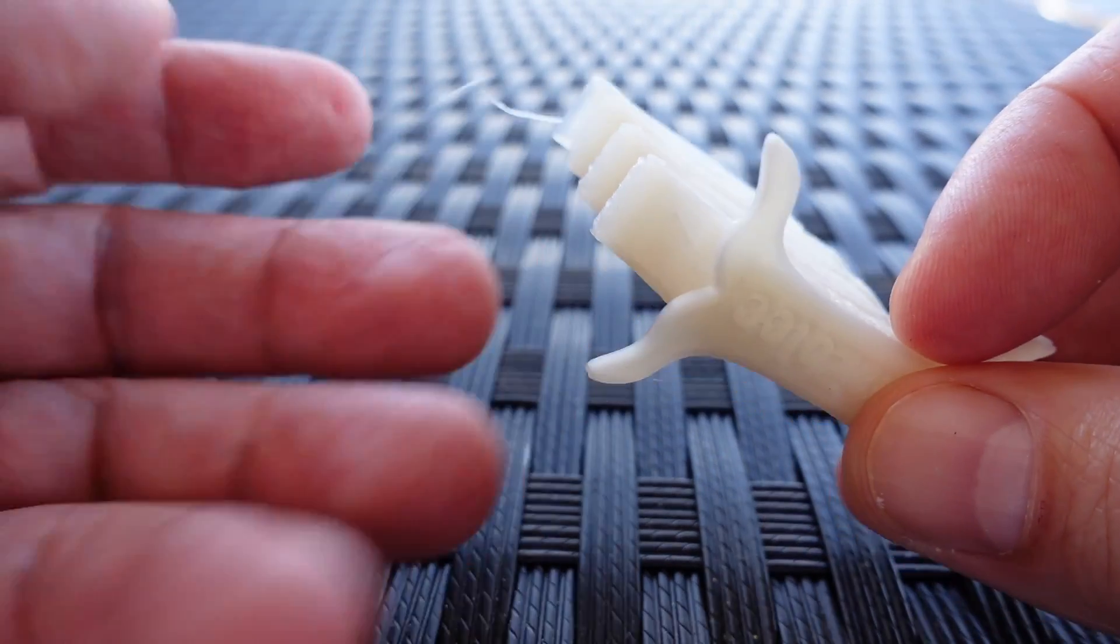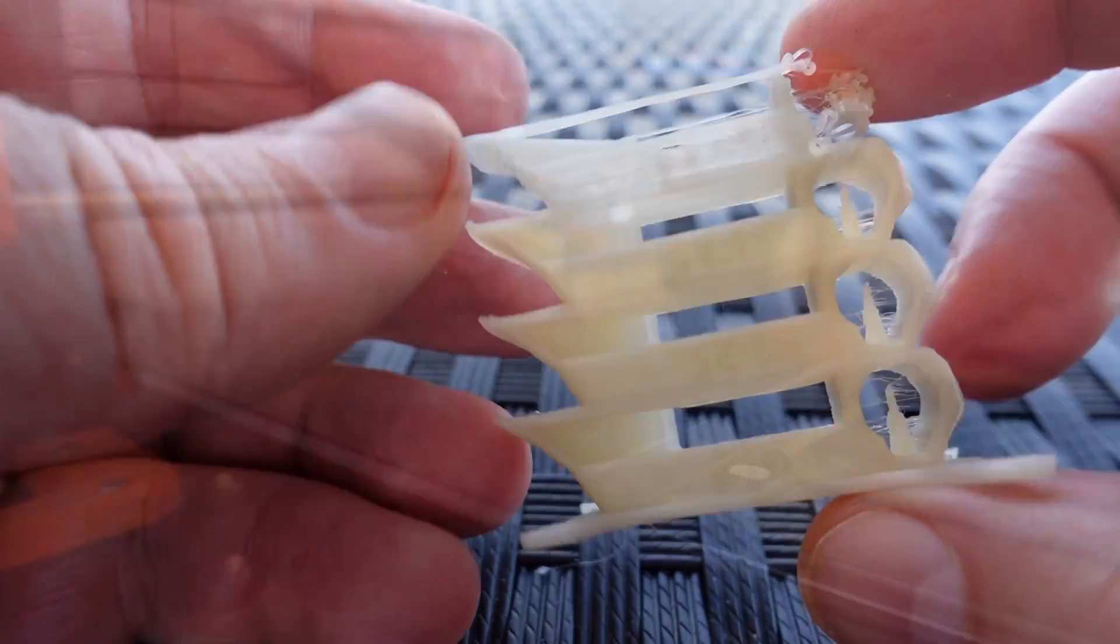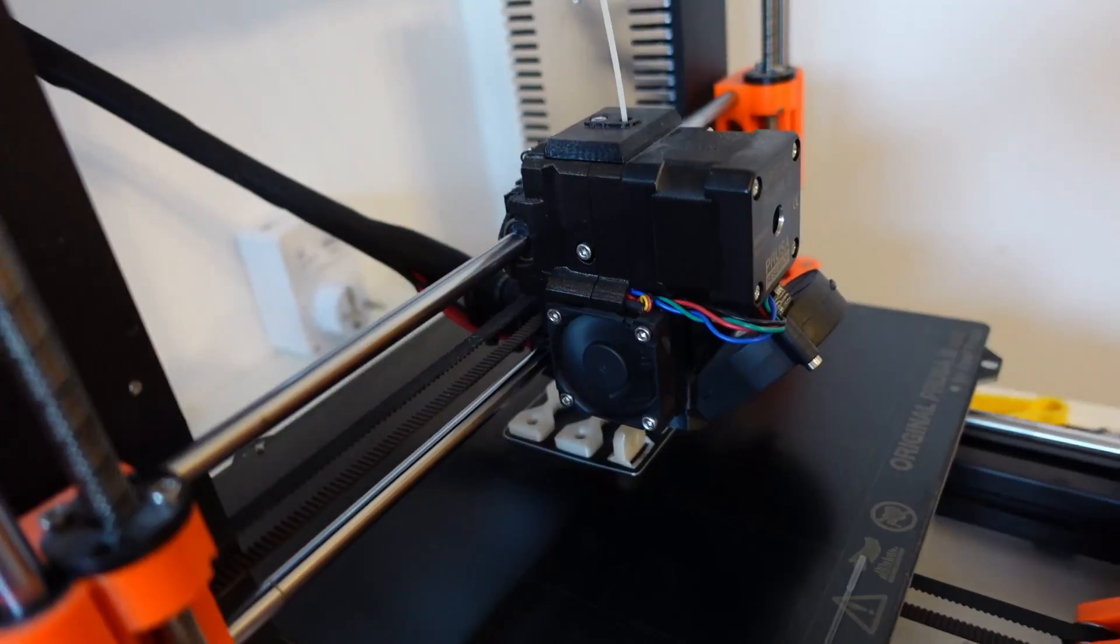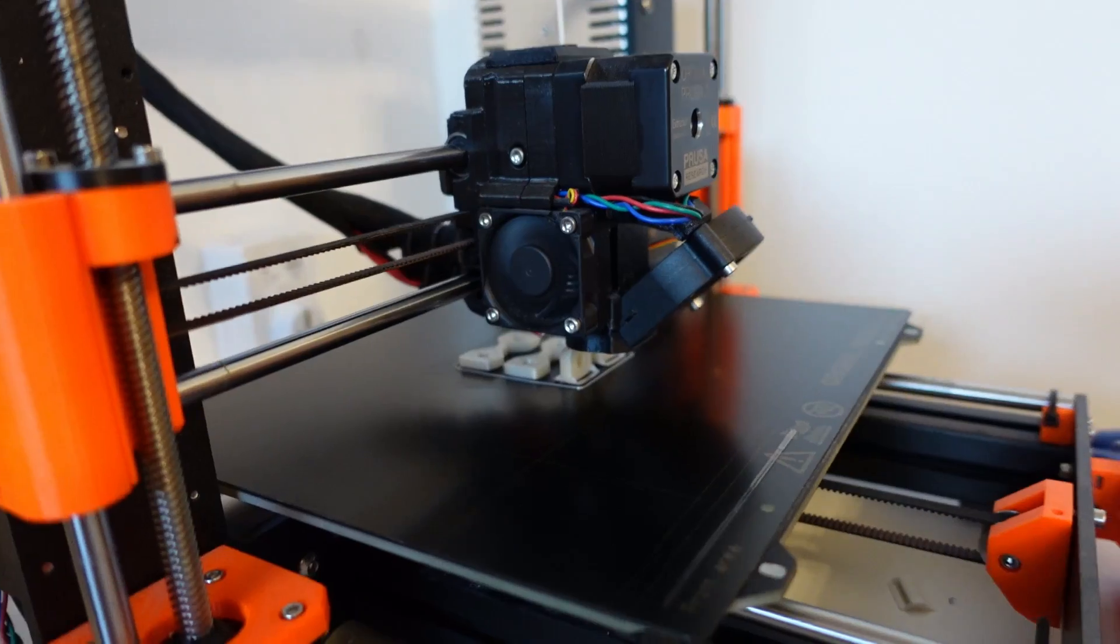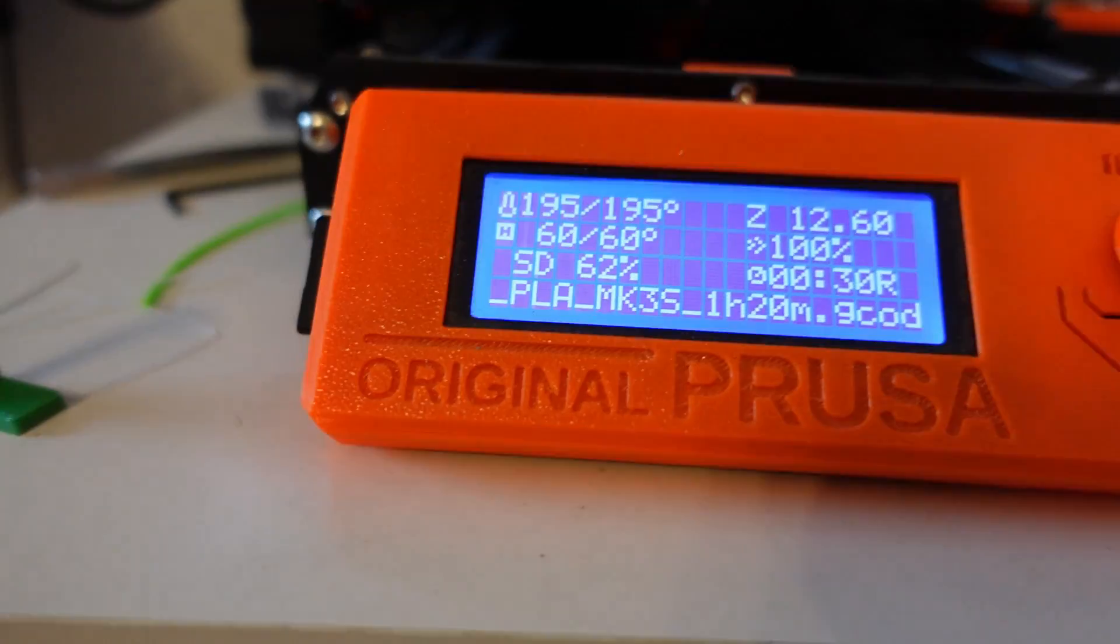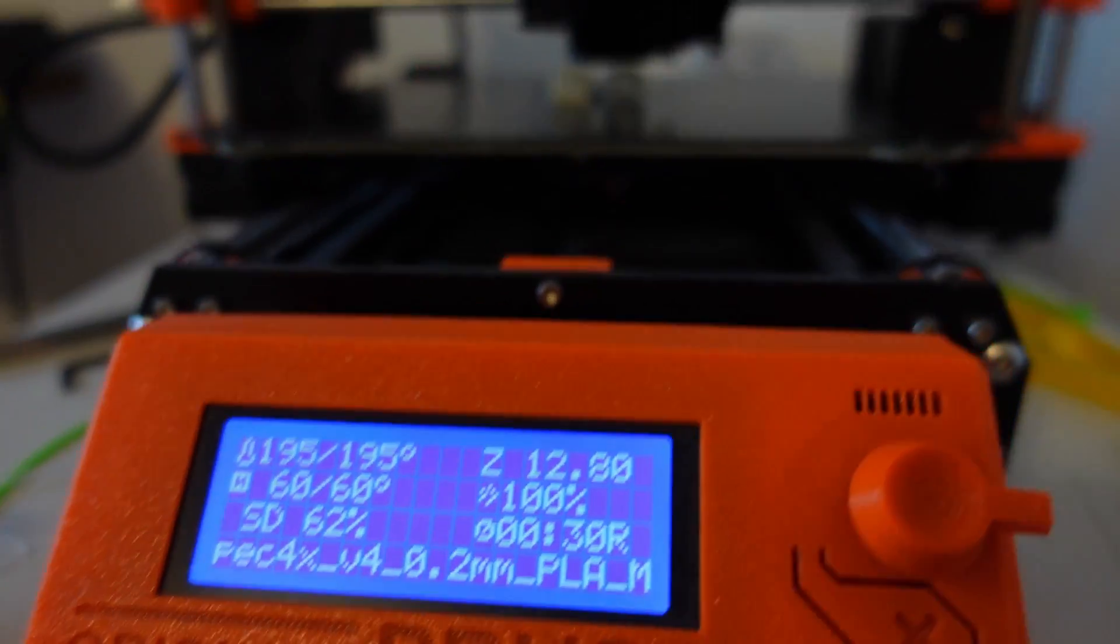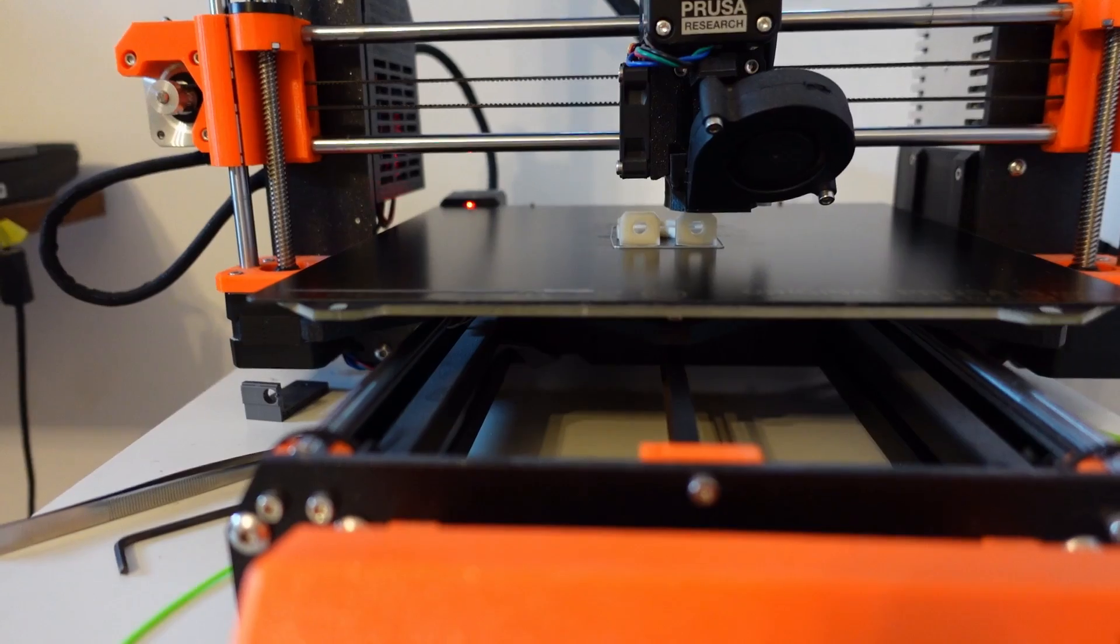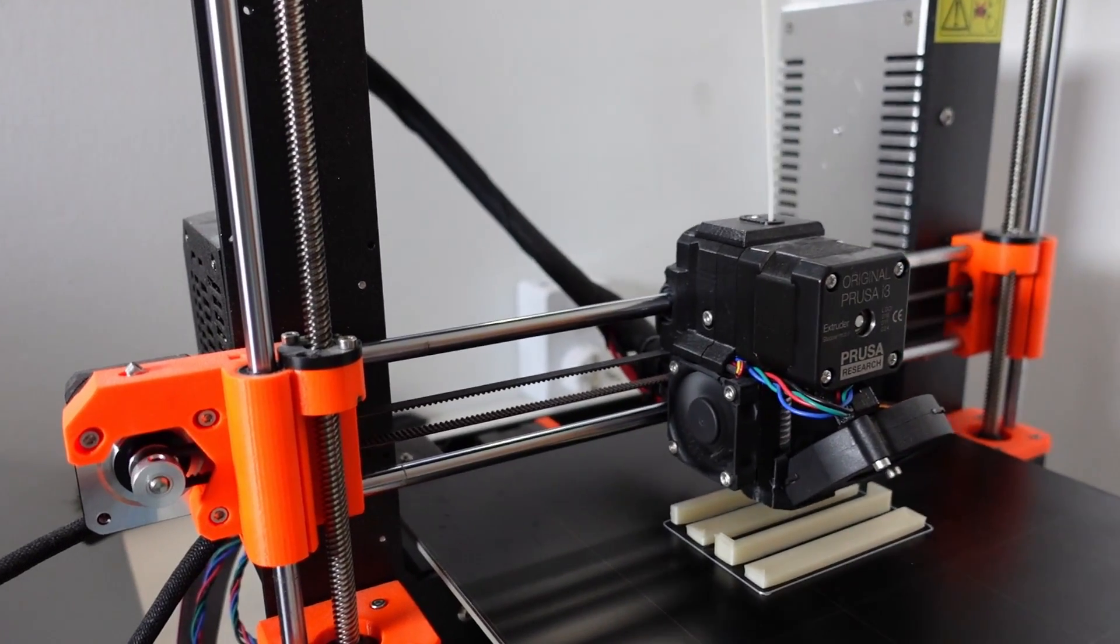But otherwise quite decent print until this temperature, and then I started with the printing of my test objects. These are my test specimens for tensile and layer adhesion test and they are all printed on the highest recommended printing temperature, which is 195 degrees Celsius. And the rest of the test specimens for impact, bending, and the temperature test.